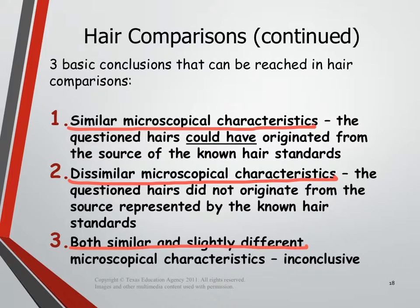While hair can't point to an individual, there are three basic conclusions we can reach after looking at hair under the microscope. The first conclusion is that two hairs have similar microscopical characteristics, meaning both could have come from the same person. The second is that they have dissimilar microscopical characteristics, meaning the two hairs probably did not come from the same person. The third is that they have both similar but also slightly different microscopical characteristics — which is inconclusive, meaning we have no clue who that hair came from. These are the only three conclusions we can make using hair analysis.